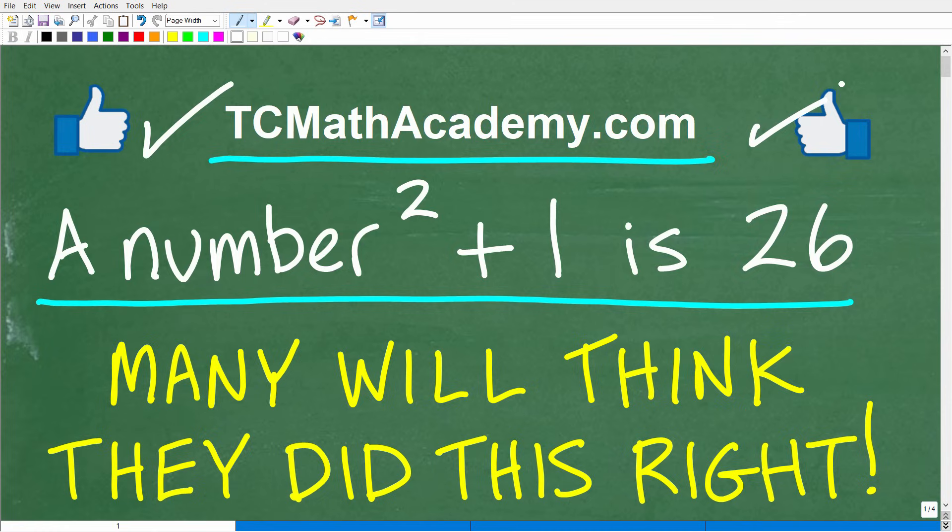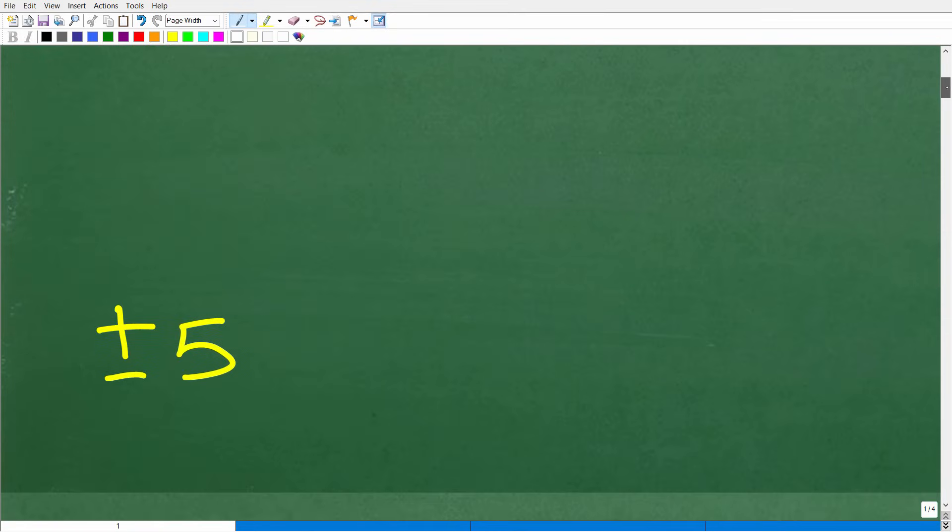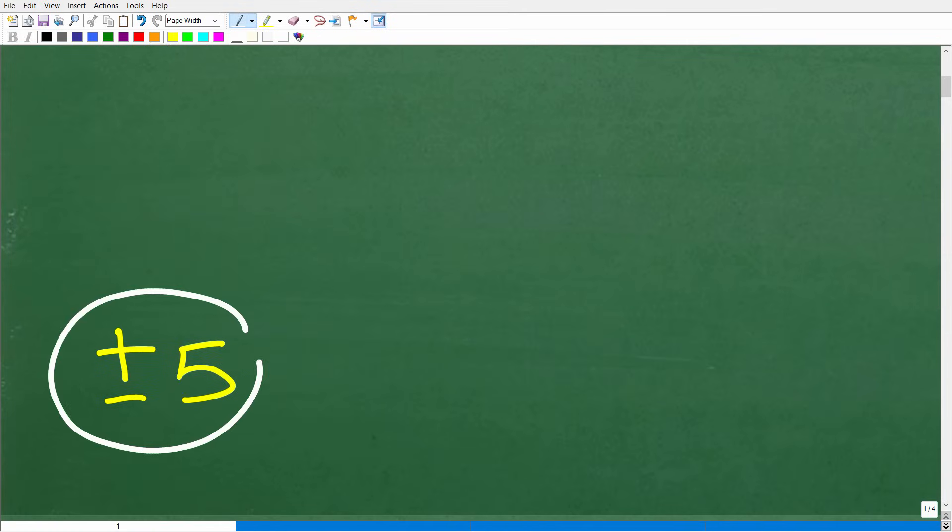Let's go ahead and see if you did this right, because the correct answer is positive and negative 5. If you have 5 as your answer, let's define the solution here. There are two parts to this answer: a positive 5 and a negative 5.